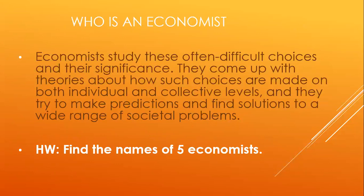So who is an economist? Economists study these often difficult choices. They come up with theories about how such choices are made on both individual and collective levels. They try to make predictions and find solutions to a wide range of societal problems. For example, predictions about the US dollar going up or the rupee falling — these are predictions by economists, based on their theories. Your homework: find the names of five economists and the theories they are most known for.